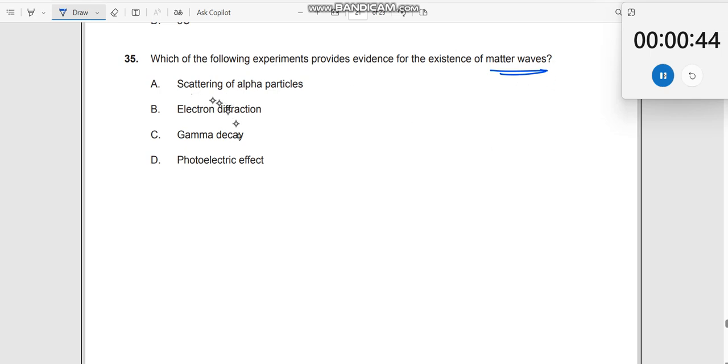Now, let us look at the first experiment. Scattering of alpha particles. What is this experiment about? Rutherford's experiment. Where do we learn this? We learn this in understanding the atomic model. Atomic model which describes that most of the atom is completely empty. So this does not describe anything about the matter waves.